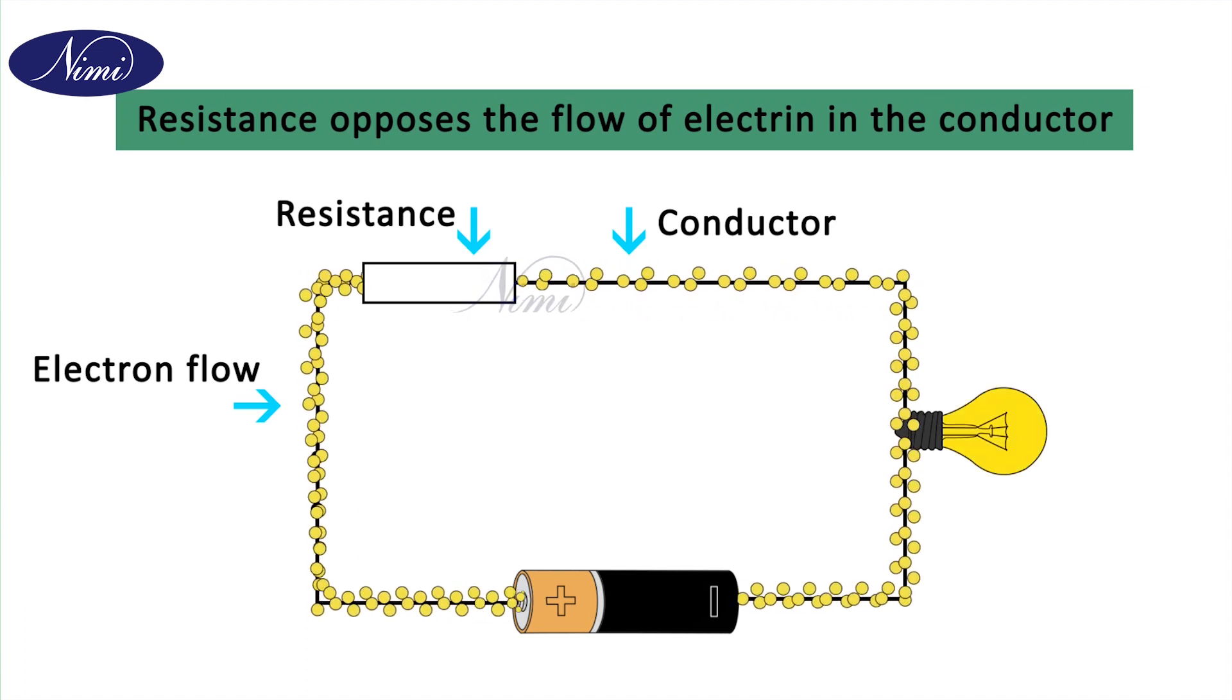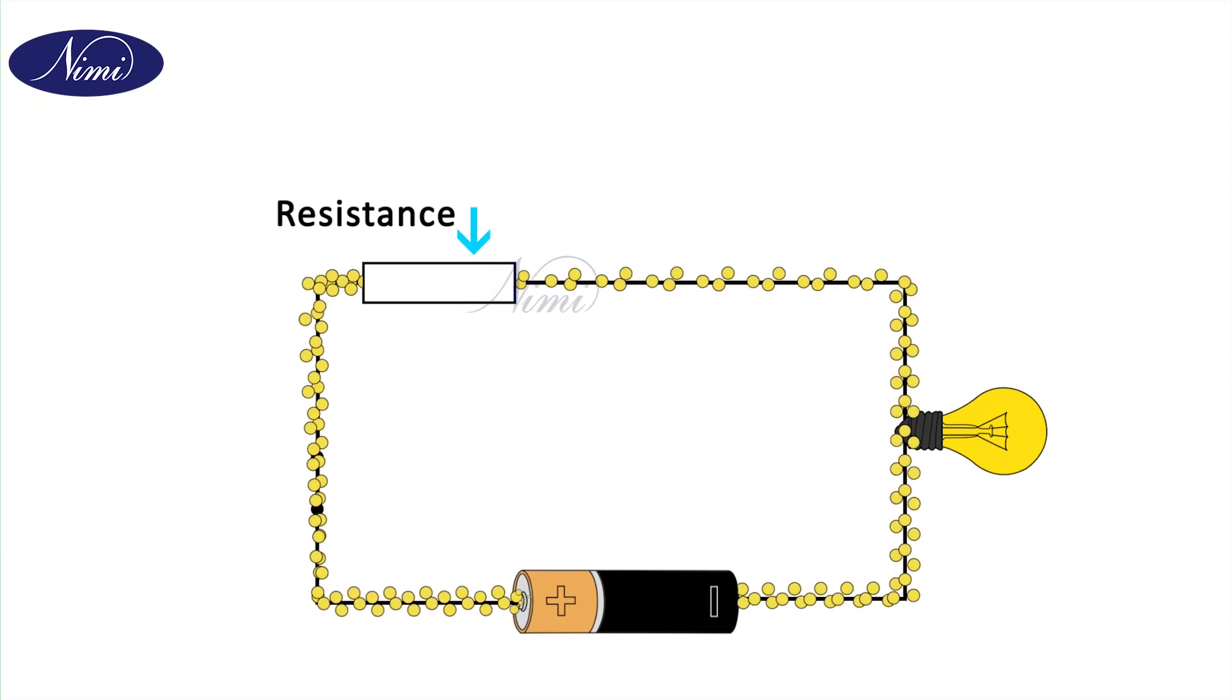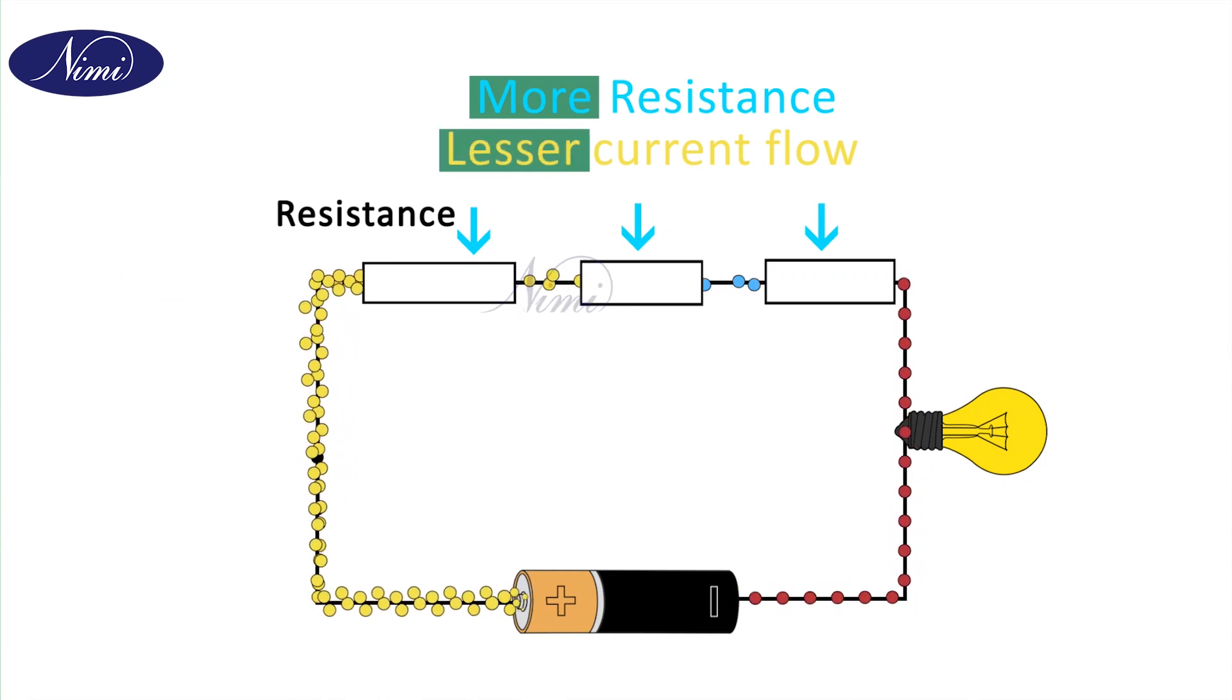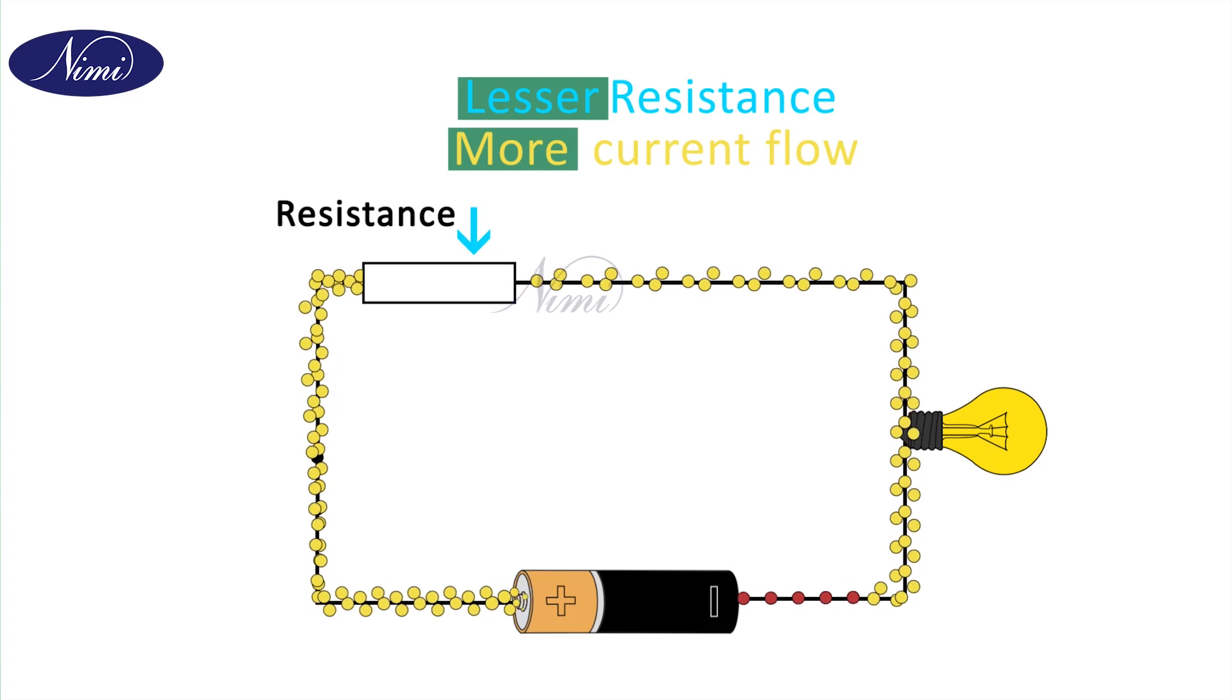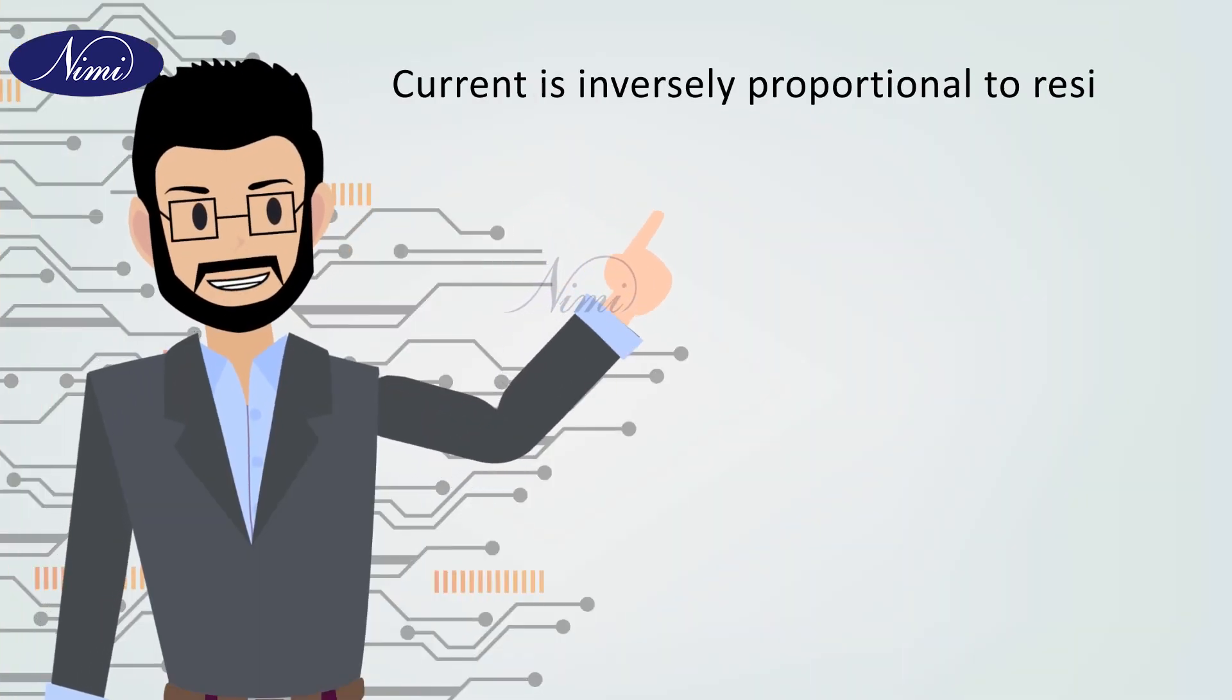In certain materials, resistance will be high. So, the current flow will be low. More resistance will cause lesser current flow and lesser resistance will cause more current flow. Therefore, current is inversely proportional to the resistance.